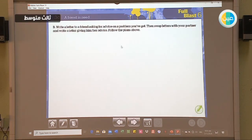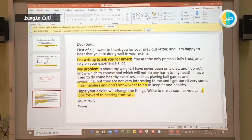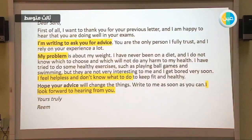At home, you should write a letter to a friend asking for advice on a problem you have. Think of a situation — a problem you need someone to help you with — and write about it. You can later swap letters with a friend and ask them to give you advice for your problem. Now we have an example letter. Let's look at each part: the beginning, the main part, and the closing.